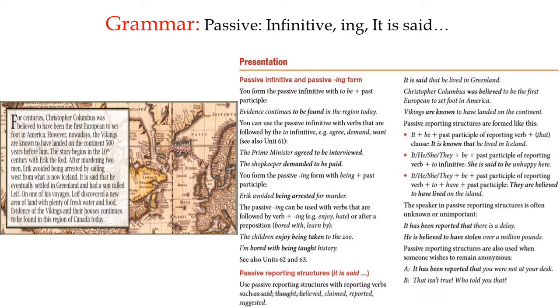The picture introduces the presentation. For centuries, Christopher Columbus was believed to have been the first European to set foot in America. However, nowadays the Vikings are known to have landed on the continent 500 years before him. The story begins in the 10th century with Eric the Red. After murdering two men, Eric avoided being arrested by sailing west from what is now Iceland. It is said that he eventually settled in Greenland and had a son called Leif. On one of his voyages, Leif discovered a new area of land with plenty of fresh water and food. Evidence of the Vikings and their houses continues to be found in this region of Canada today.